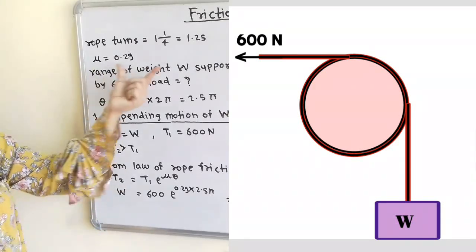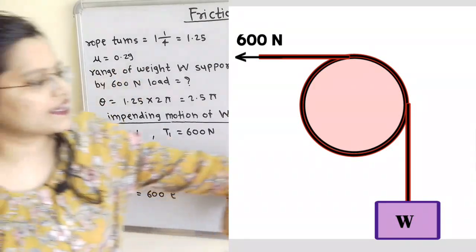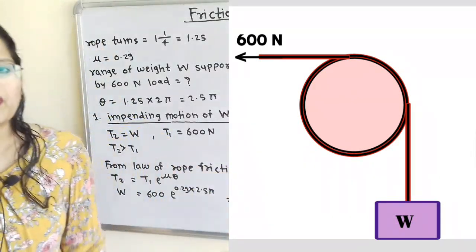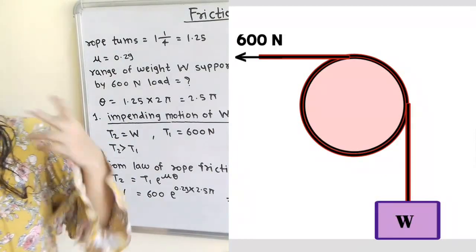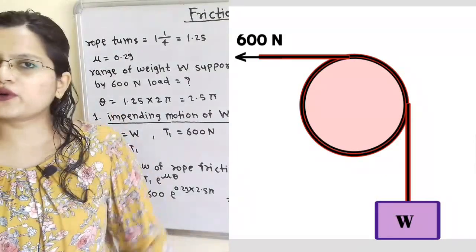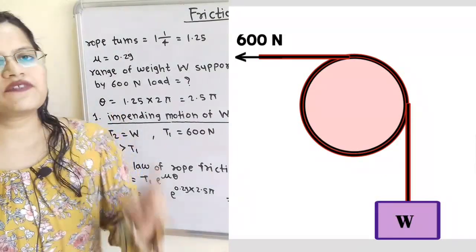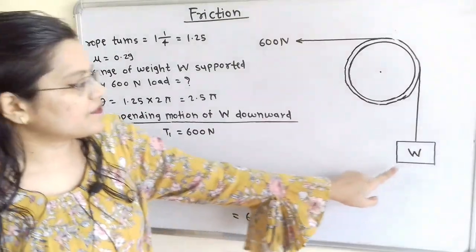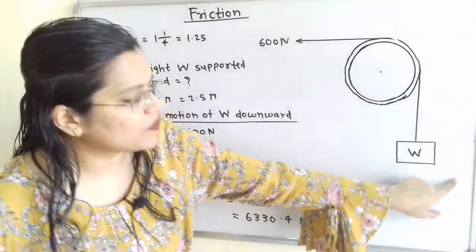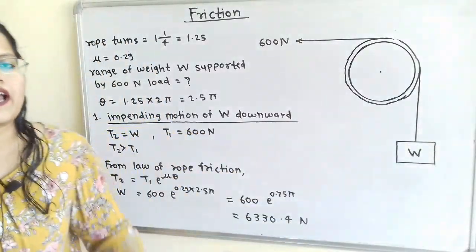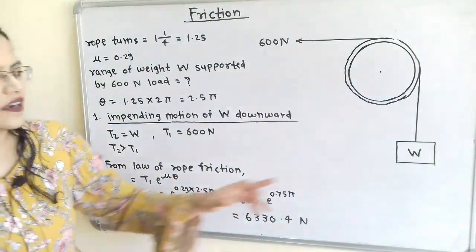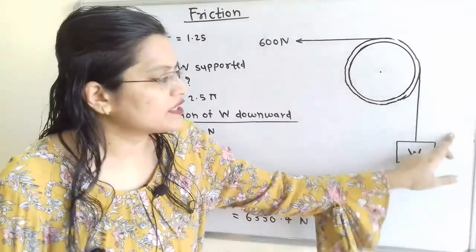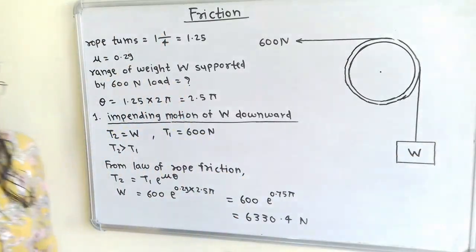How do we find the range of weight W? For that, we have to apply two conditions. In the first condition, the weight will move in the downward direction, and in the second condition, the weight will move in the upward direction.